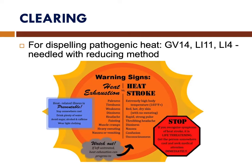For dispelling pathogenic heat, we use GB14, LI11, and LI4, which are needled with the reducing method. Examples of conditions with pathogenic heat are heat exhaustion and heat stroke. In heat exhaustion, there is paleness, tiredness, weakness, dizziness, headache, fainting, muscle cramps, heavy sweating, nausea, or vomiting.